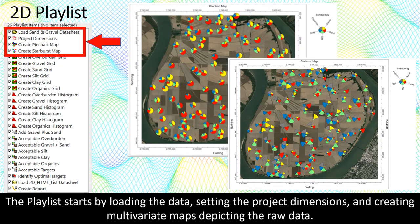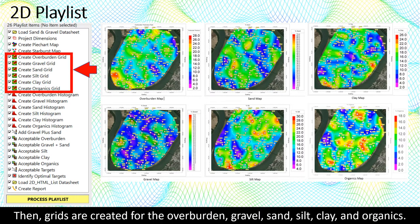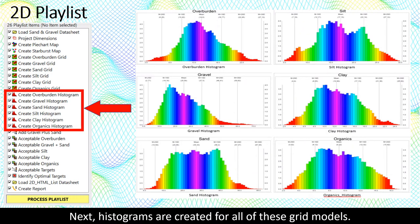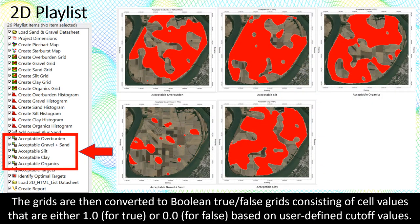The playlist starts by loading the data, setting the project dimensions, and creating multivariate maps depicting the raw data. Then grids are created for the overburden, gravel, sand, silt, clay, and organics — this process involves the estimation of gridded points based on values of nearby control points. Next, histograms are created for all of these grid models. The gravel grid is added to the sand grid because we're equally interested in either of these commodities. The grids are then converted to Boolean true-false grids consisting of cell values that are either 1.0 for true or 0.0 for false based on user-defined cutoff values.